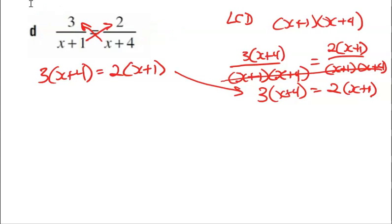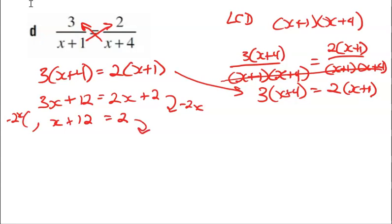3 times x plus 3 times 4 is 12, equals 2 times x plus 2. We get all our x's on one side. 3x minus 2x gives us x, plus 12, equals 3. And of course, we subtract 12 from both sides, gives us x equals negative 10.